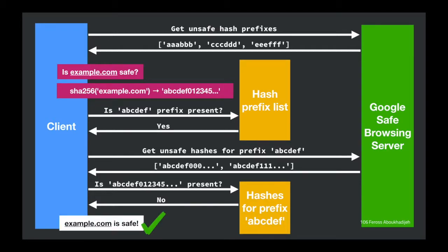If the full hash is present, we know we have an unsafe URL and warn the user. One downside is we're still leaking some information — the server knows we visited a URL starting with a particular prefix. Over time, if behaving maliciously, it could track the requests from your IP address and learn the kinds of things you visit. The advantage of using hash prefixes over downloading the entire list is that it's much smaller.